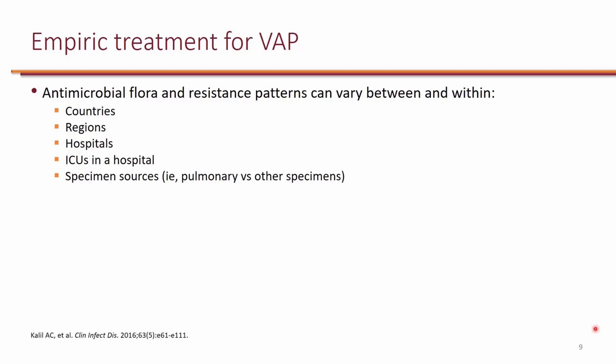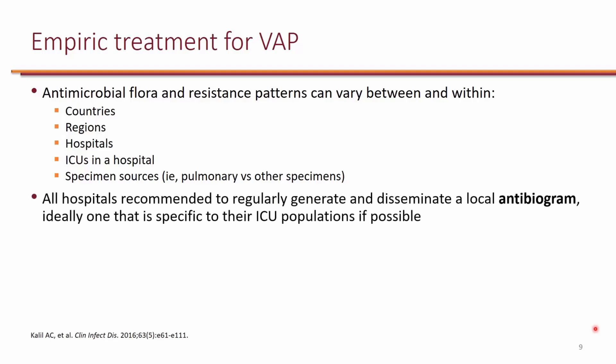Another important factor is the source of the specimen. For example, organisms from urine versus organisms from a pulmonary specimen can have different resistance patterns. That's why it's recommended that all hospitals regularly generate and disseminate a local antibiogram — ideally one specific to their ICU populations — and do this at least once a year.